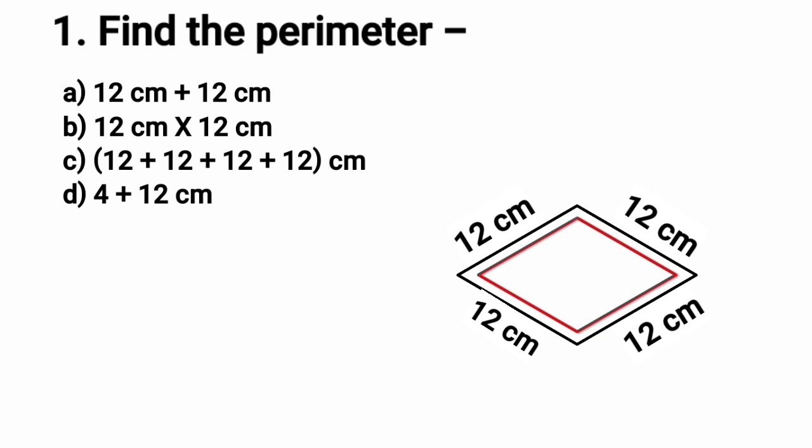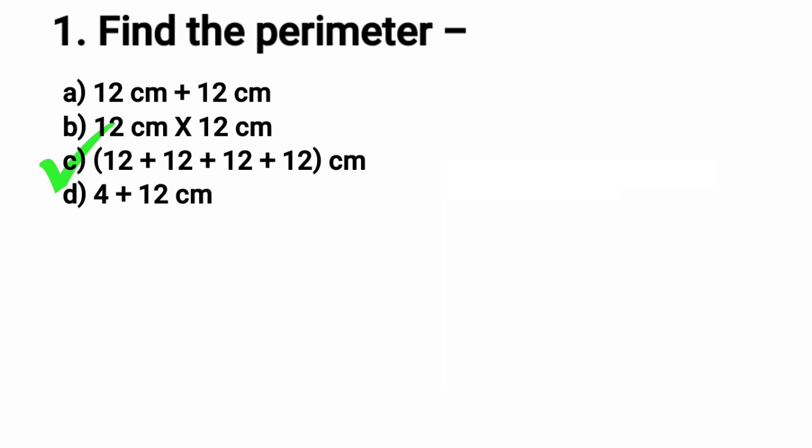The option where we will find 12 four times will be the correct option. Look carefully. You can see that among these options, Option C has 12 added 4 times. Yes, it is the right option and we put a tick at Option C.